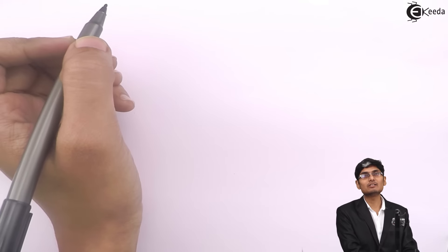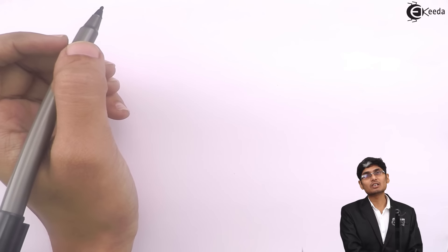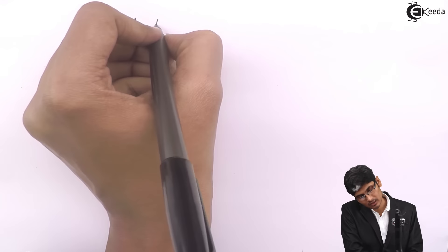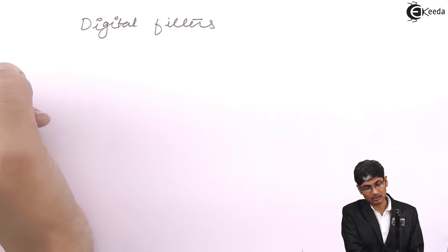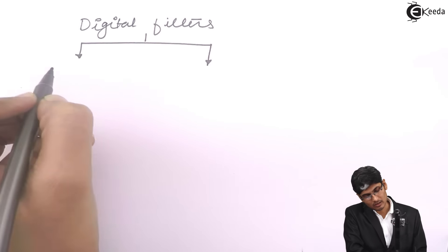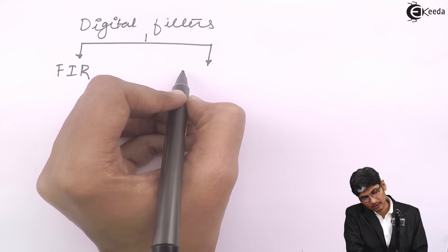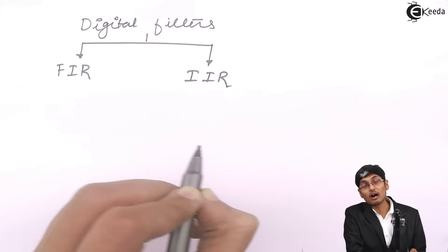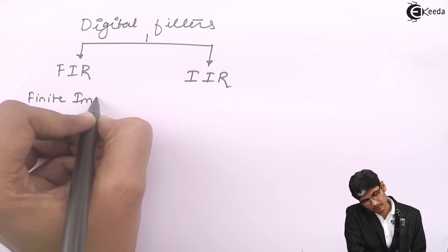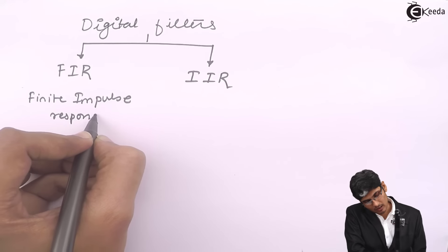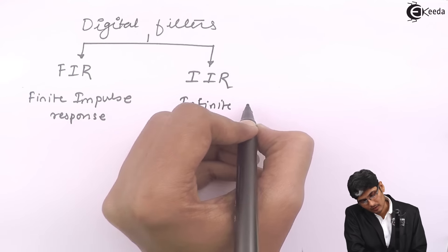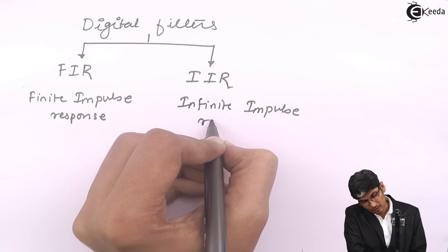Hi friends, let us see today what do you mean by digital filters. Today's topic is digital filters. There are basically two types of digital filters: one is called FIR filters and the other one is called IIR filters. FIR stands for Finite Impulse Response Filter, whereas IIR stands for Infinite Impulse Response Filters.